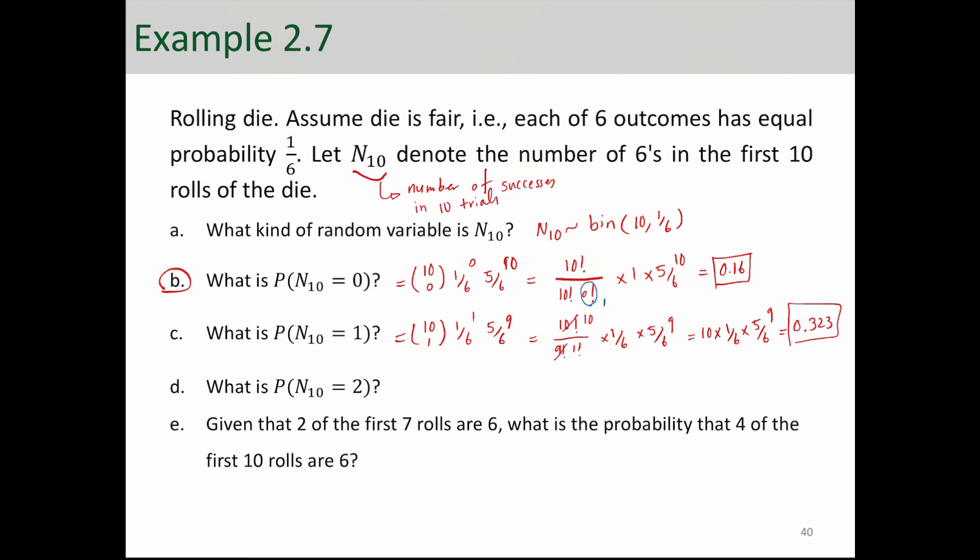About 32% chance that you only get 1 six out of 10 rolls. What is the probability of 2 successes? Again, you can do that the same way. That is 29%.